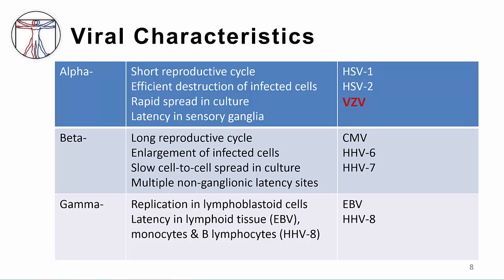This table reviews the key characteristics of the herpes virus family. Herpes simplex virus and VZV share important characteristics. The alpha herpes viruses have short reproductive cycles, and when the virus replicates, it induces destruction of infected cells by lysis and apoptosis. Cell-to-cell spread occurs rapidly, and a key feature of this family is establishment of long-term infection or latency in the sensory nerve ganglia.